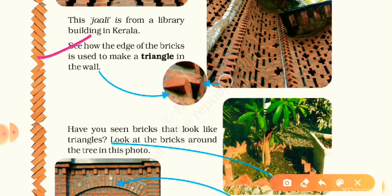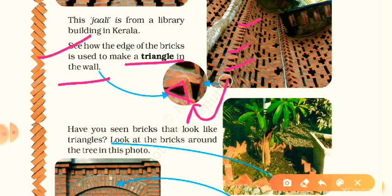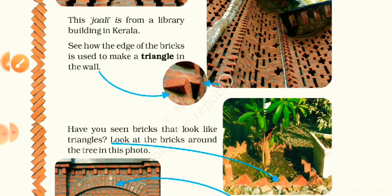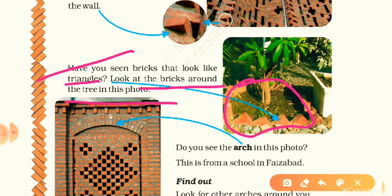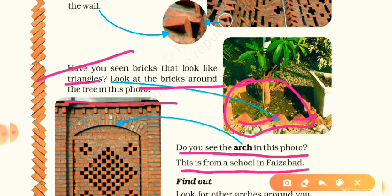See how the edge of a brick is used to make a triangle in the wall. Here you can see the walls, and in one zoomed picture you can see the shape of a triangle. You see this type of shape in the chabutras around a plant. Have you seen bricks that look like triangles? Look at the bricks around the tree in this photo — many bricks are shaped triangular.